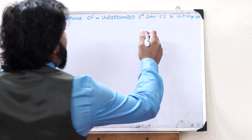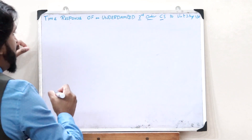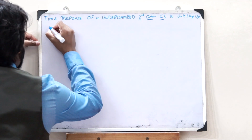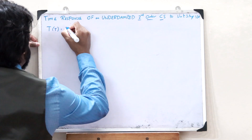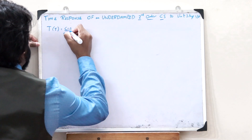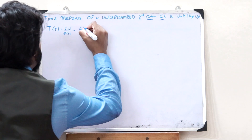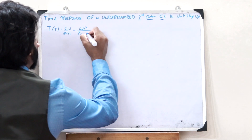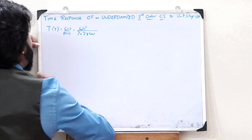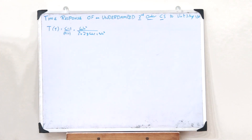We know for a fact that every second-order control system will have a transfer function given as T(s) = C(s) / R(s), which is equal to ωn² divided by s² + 2ζωn·s + ωn².